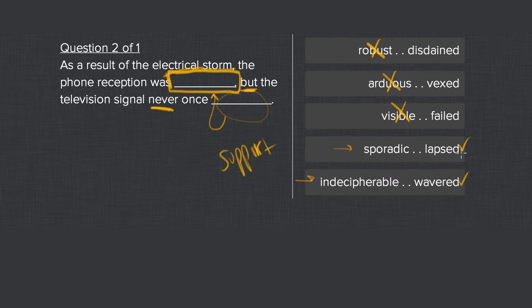Lapsed means it sort of expired, which means stopped working. Wavered would mean it went in and out so again unreliable. These words are both appropriate.